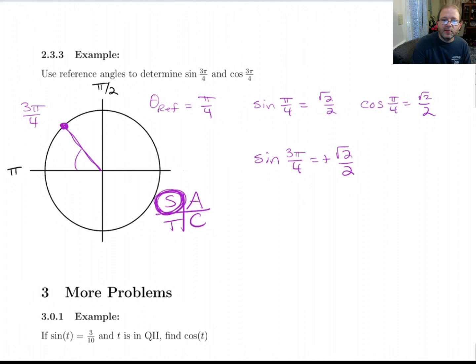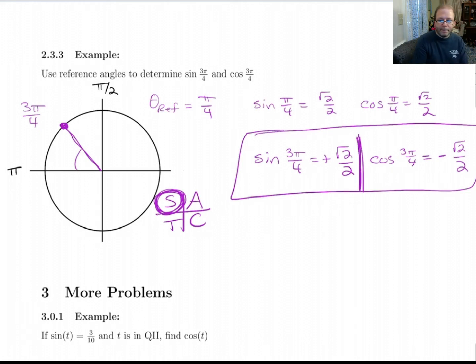And cosine of 3 pi over 4 is going to be negative root 2 over 2. All right.